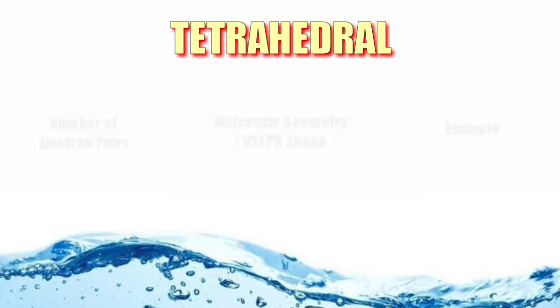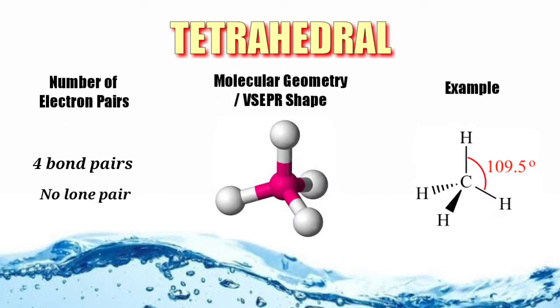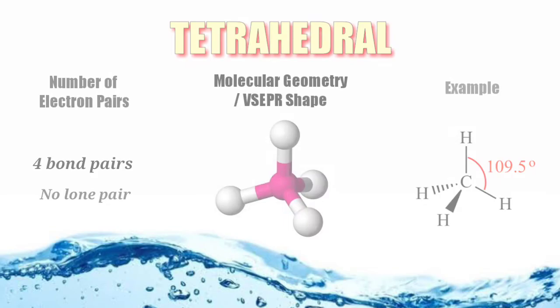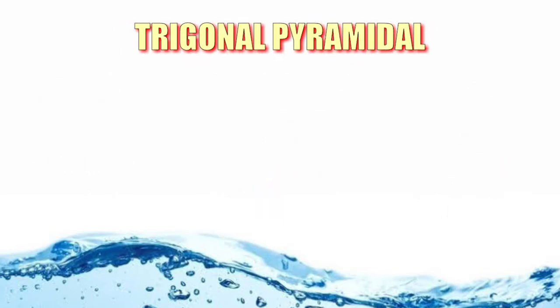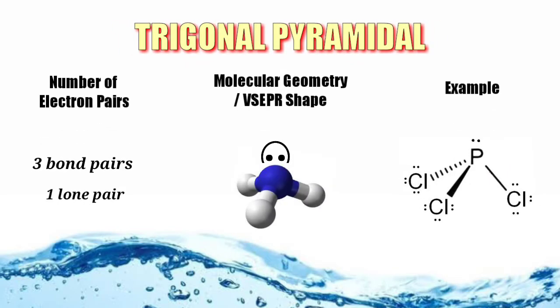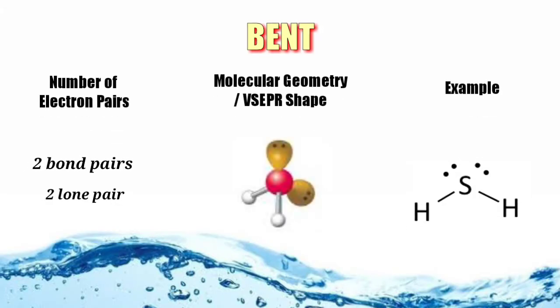Next is the tetrahedral. If there are four electron pairs bonded to the central atom and the central atom has no lone pair, the geometric shape is called tetrahedral. We also have trigonal pyramidal with three bond pairs and one lone pair. This is trigonal pyramidal. Next is also called bent but compared to the first one, it has two bond pairs and two lone pairs. This is bent.